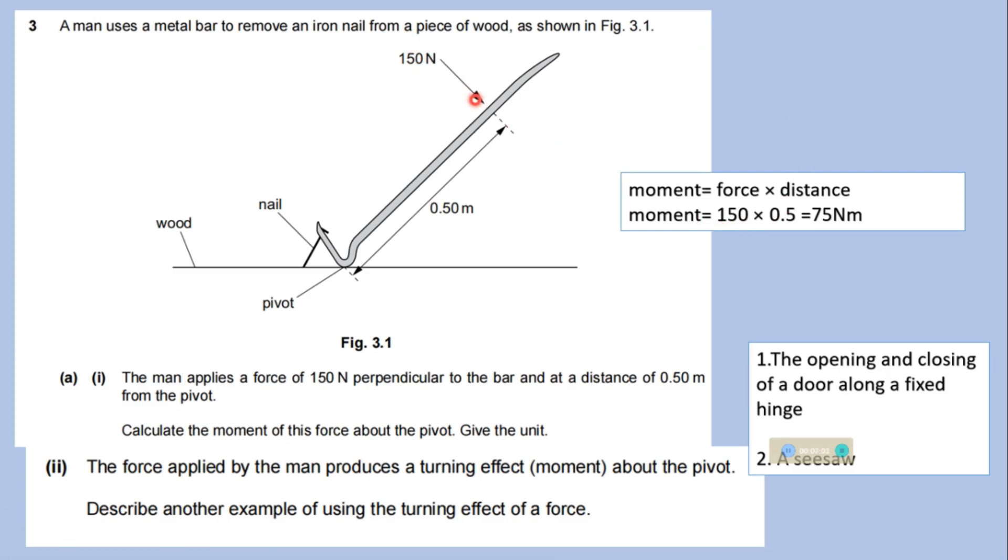We know that movement is equal to force multiplied by the distance. Or the force multiplied by the perpendicular distance from the pivot. So, the perpendicular distance of this force from the pivot is 0.50. And the magnitude of this force is 150 Newton. You have to multiply. The movement is equal to 75 Newton meter. That unit will be Newton meter. Force is in Newton. Distance is in meter.